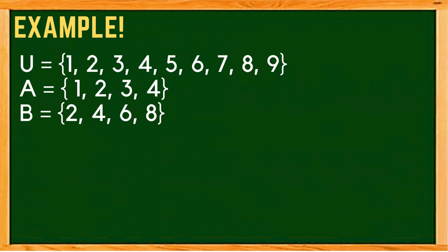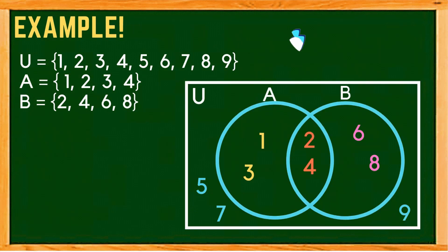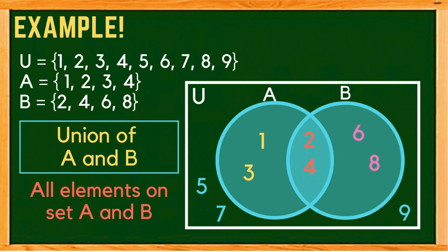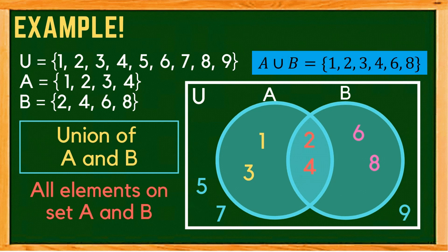Let us first find the union of set A and B. Remember that when we say union, we simply combine all the elements of set A and set B. Using the Venn diagram, we shade the entire circles of set A and set B, since they contain all the elements of both sets. So the union of set A and B consists of the elements 1, 2, 3, 4, 6, and 8.